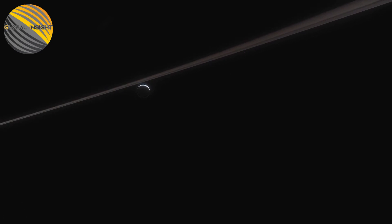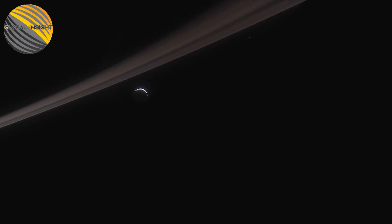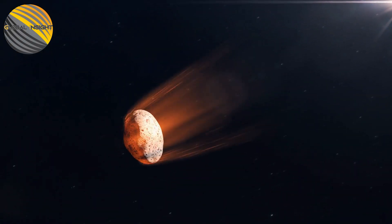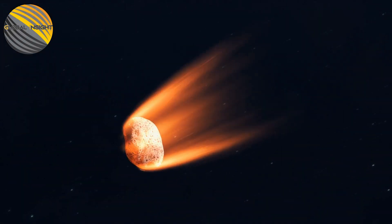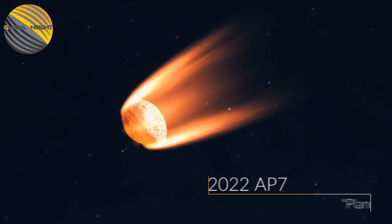Scientists say that over thousands of years, the asteroid and Earth will gradually start to cross at the same point, increasing the likelihood of a catastrophic impact. At the moment, 2022 AP7 crosses Earth's orbit while our planet is on the opposite side of the sun.